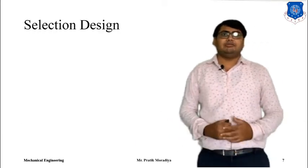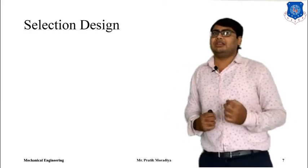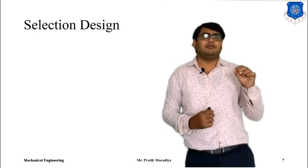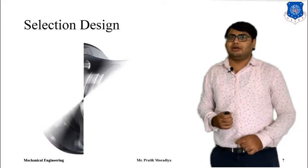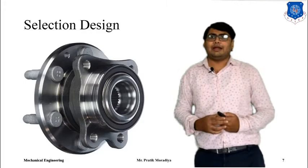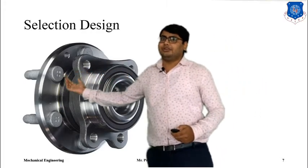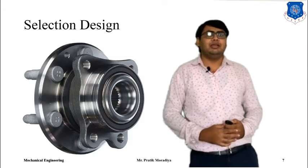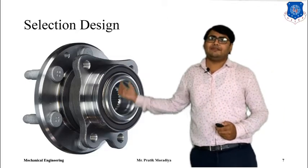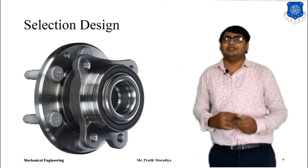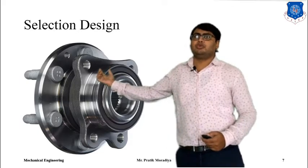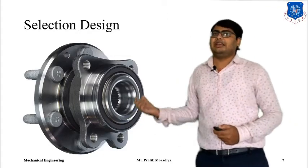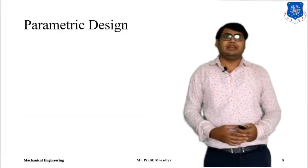The first one is selection design. In selection design, we are not designing from scratch but selecting from a catalogue. Some people have already designed products for different uses and we are just selecting one product from their catalogue. For example, when you design any part you will need many fasteners. Screws and fasteners are available in standard dimensions, so instead of designing them from scratch with force calculations, you select the screw or fastener from a catalogue that is suitable to you. This is what we mean by selection design.